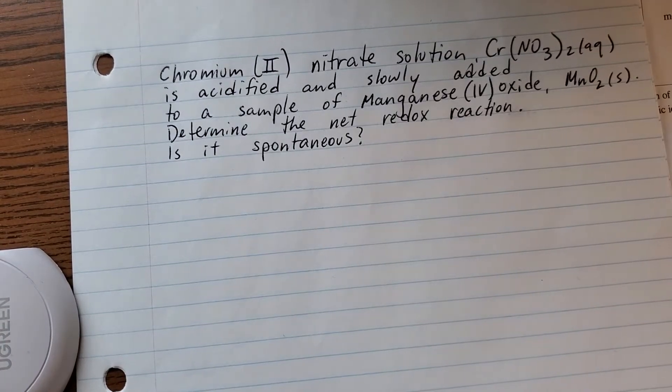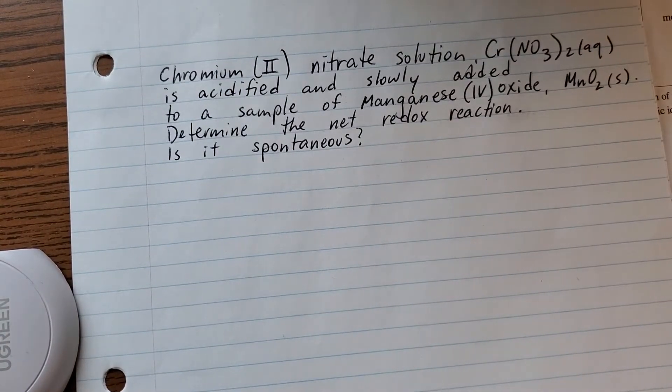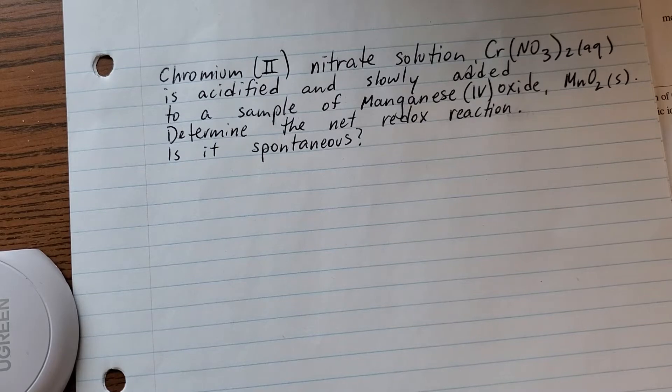Hi chemistry class. I want to go over an example of using a redox table to predict a redox reaction.